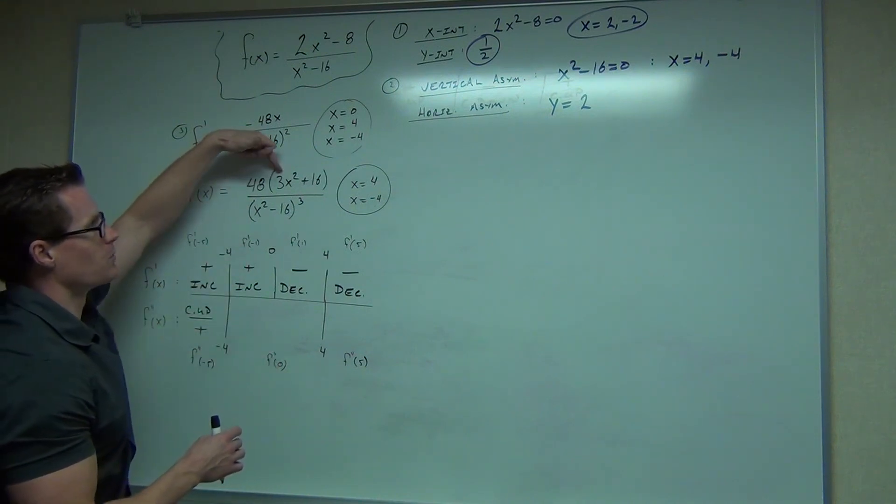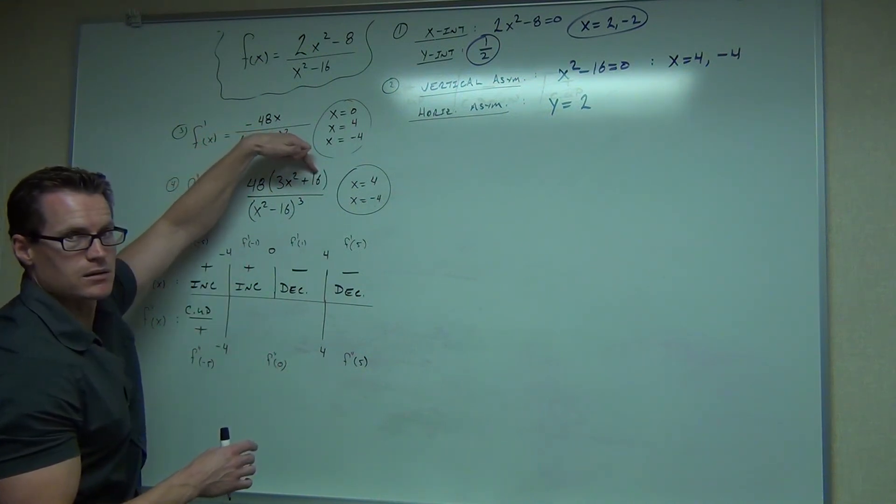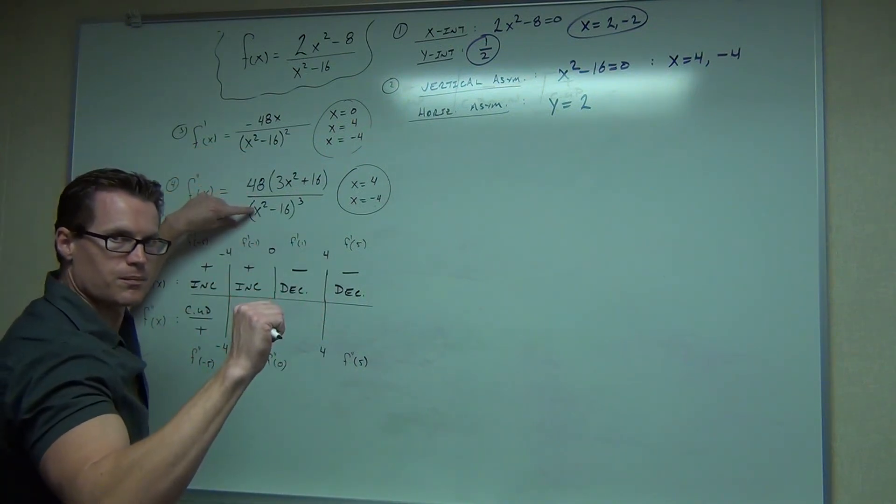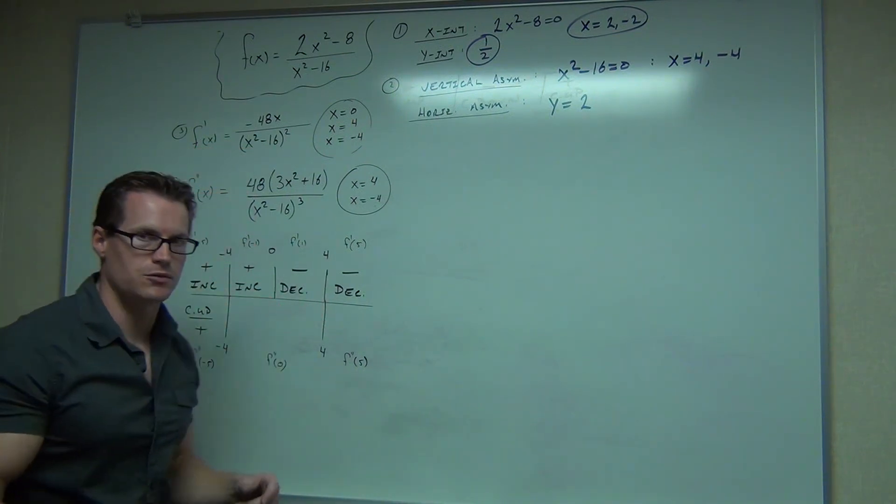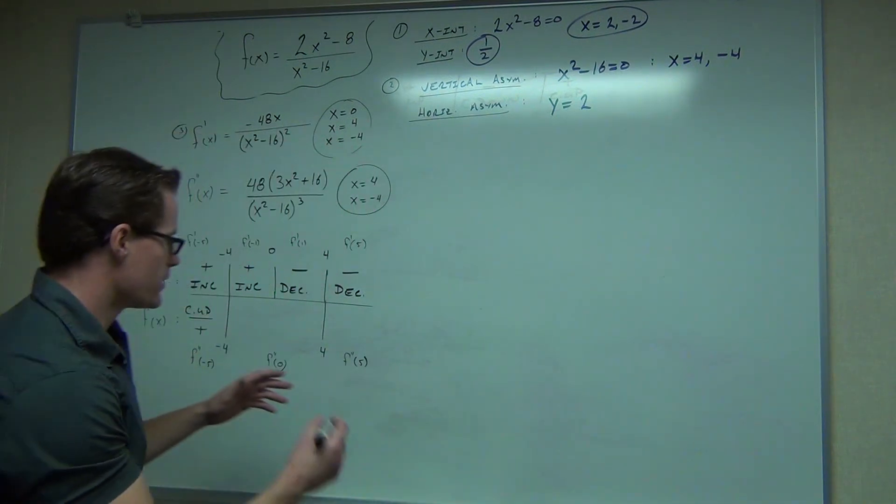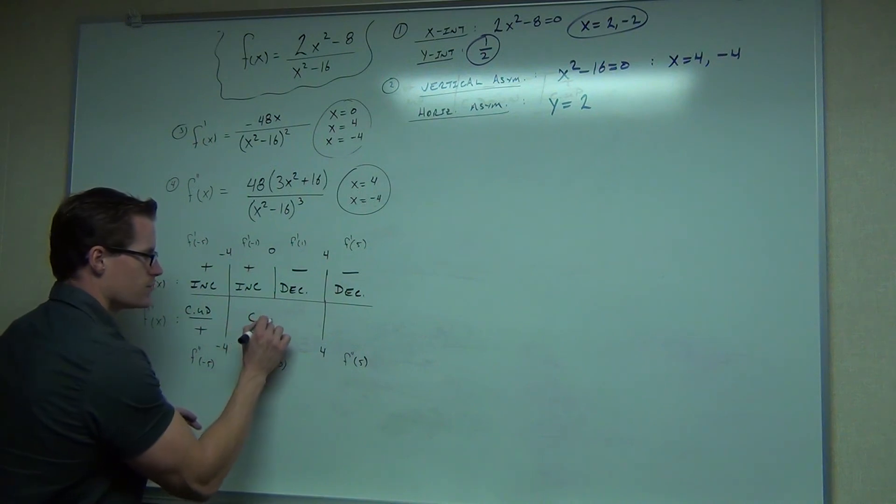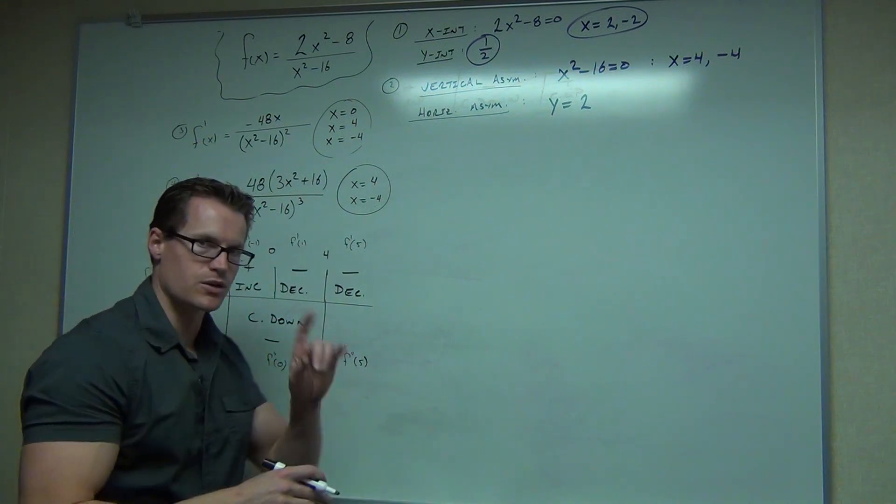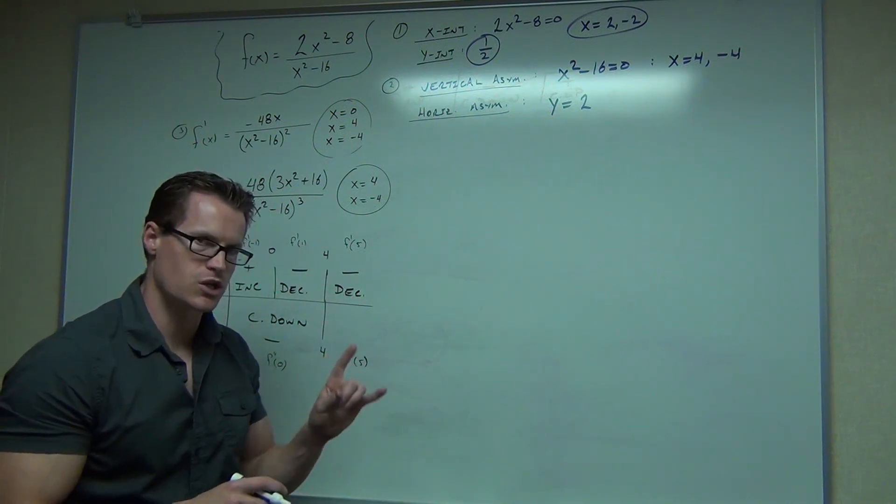This is the one that's going to be changing for us. If we plug in 0, 0, well that's 16, times a positive number, it's still positive, but look what happens down here. 0 squared is 0, minus 16, well that's a negative. What happens when you cube a negative? Well it's still a negative. So this is going to be concave down. And it's concave down for its entirety. Notice how we didn't get that 0 in our second derivative, so that's not going to be a place where we're changing concavity.